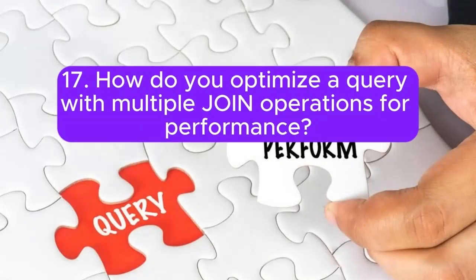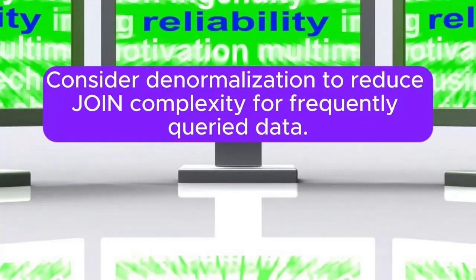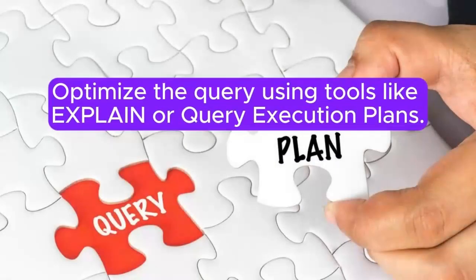Question 17: How do you optimize a query with multiple join operations for performance? Answer: Ensure join columns are properly indexed. Consider denormalization to reduce join complexity for frequently queried data. Optimize the query using tools like explain or query execution plans.